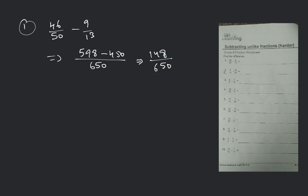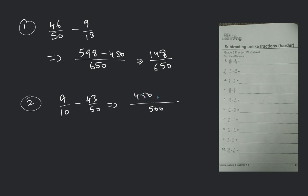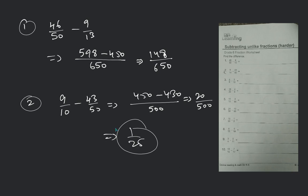I am done. Number 2 question: 9 by 10 plus 43 by 50. We do the same thing — LCM. 50 into 9 = 450, minus 430. That is giving 20 by 500. You just divide it by lowest common multiple — you will be getting 1 by 25.